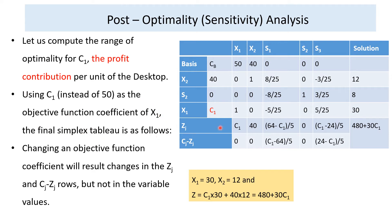Changing an objective function coefficient results in changes in zj and cj − zj, but not in the variable values. When we calculate zj, we multiply the cb column with the corresponding x1, x2, x3 columns. For example: 40 × 0, 0 × 0, c1 × 1 gives c1; and 40 × 1, 0 × 0, c1 × 0 gives 40.